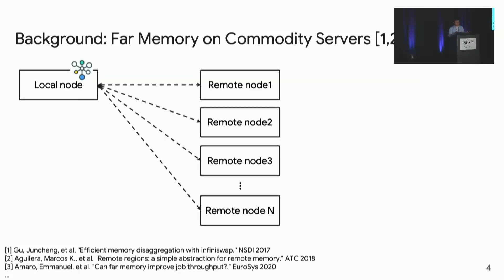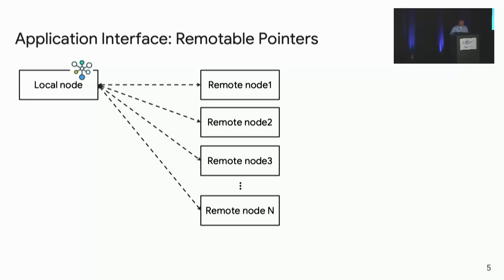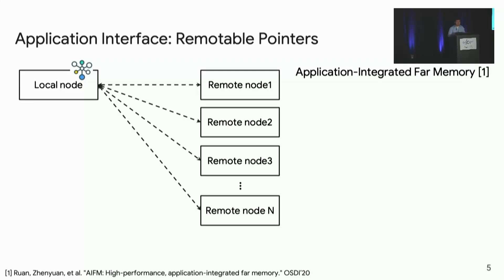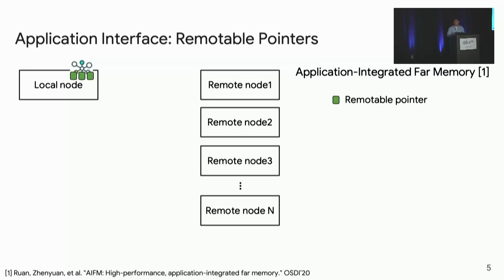Focusing on one application running on one node using a far memory pool — we call that node the local node and the set of nodes that donate far memory the remote nodes. We assume the application uses removal pointers as the interface to access far memory, the same as in AIFM (application-integrated far memory from OSDI'20). These removal pointers are very similar to smart pointers in C++ and encode information to locate objects residing in either local or far memory, also called removable objects.